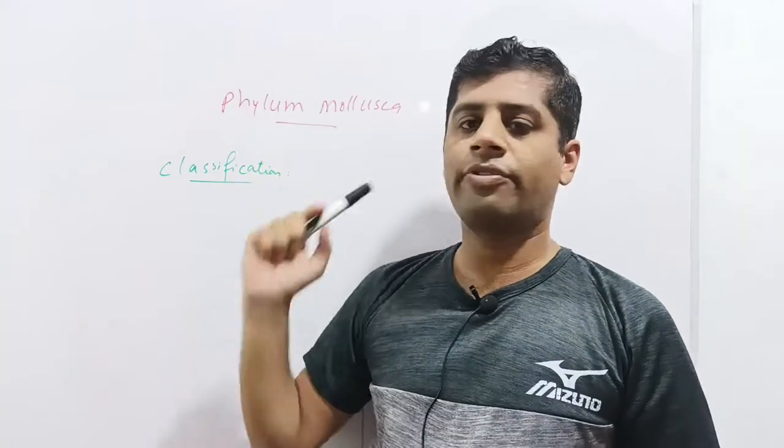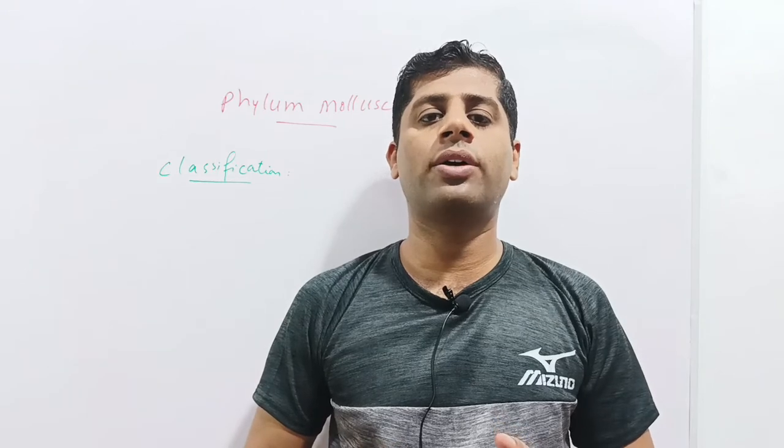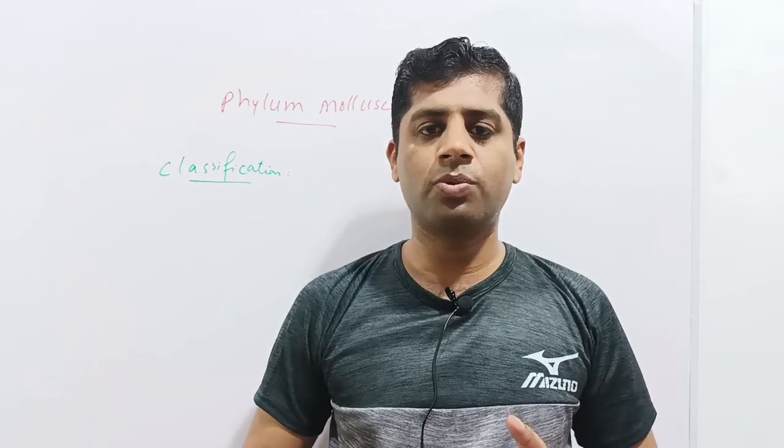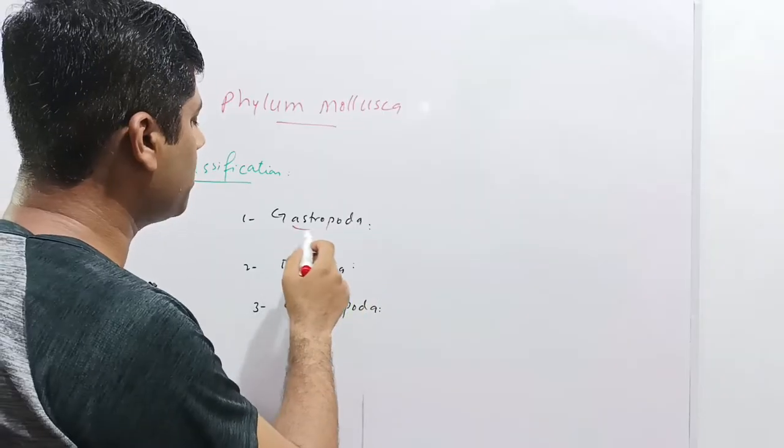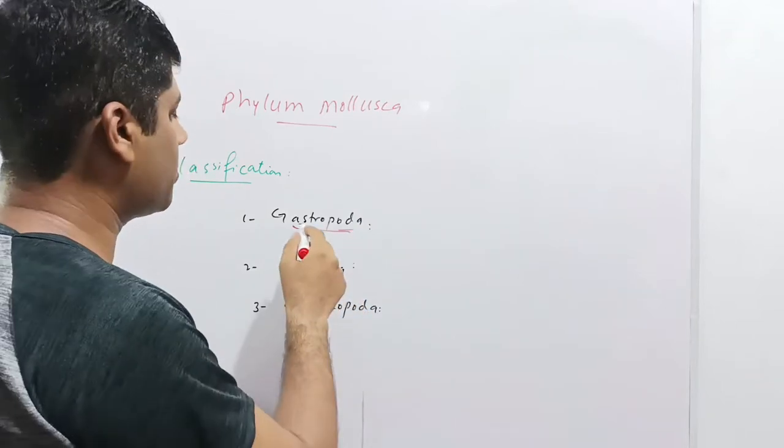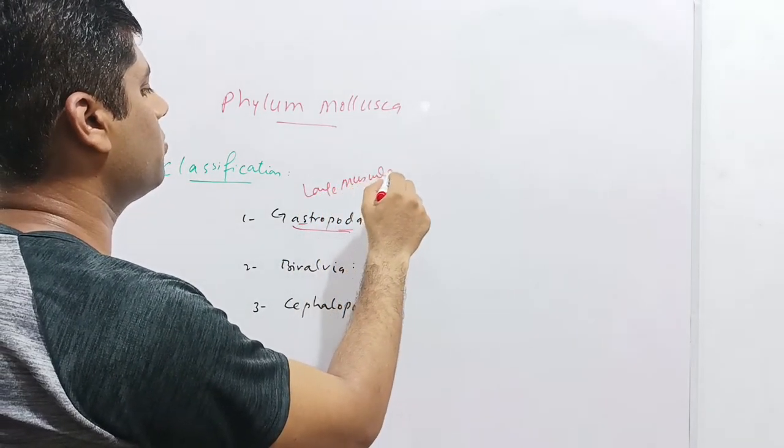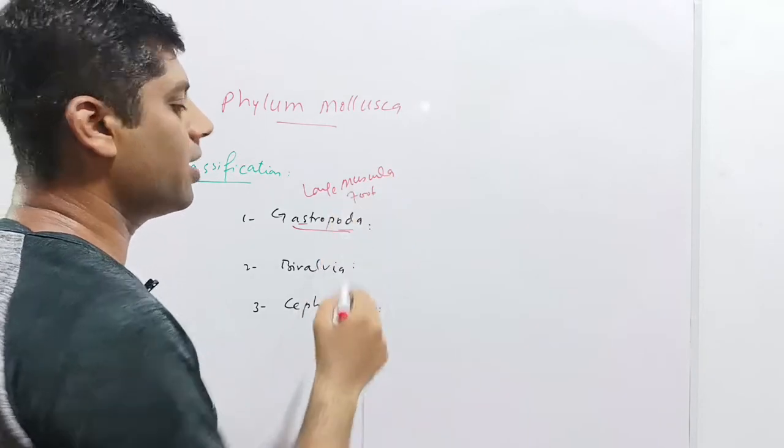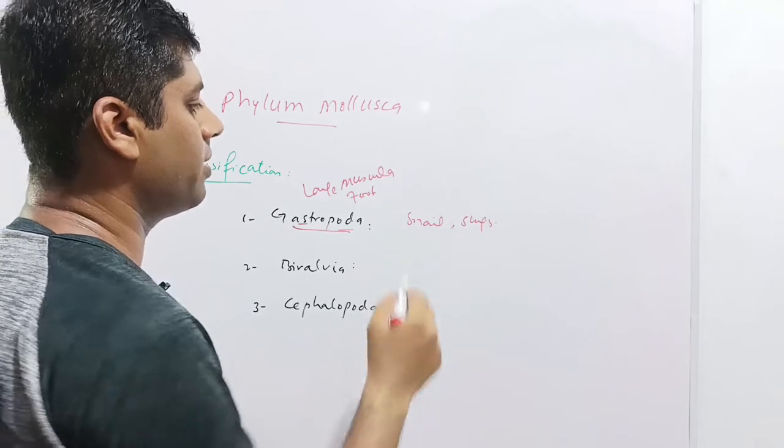Now we will discuss the classification of phylum mollusca. There are six classes of phylum mollusca, out of which three are of utmost importance. These three classes are gastropoda, bivalvia, and cephalopoda. Gastropoda is named after its large muscular foot. Poda means foot and gastro here refers to large muscular foot. The animals with large muscular foot are called gastropoda. These are snail and slugs, which are terrestrial animals.